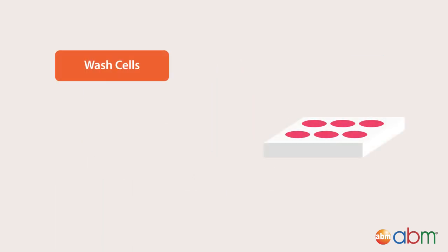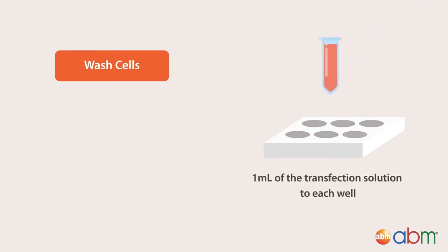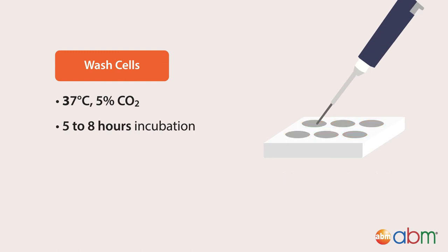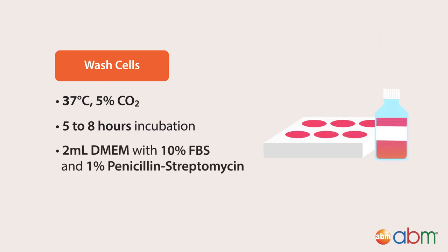Next, aspirate the wash solution from the 6-well plates and add 1 ml of the transfection solution to each well. Label the plates and incubate at 37 degrees Celsius, 5% CO2 for 5 to 8 hours. After 5 to 8 hours of incubation, aspirate the transfection solution and replace it with 2 ml of DMEM with 10% FBS and 1% penicillin-streptomycin.